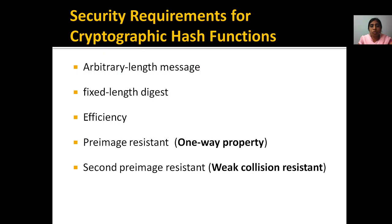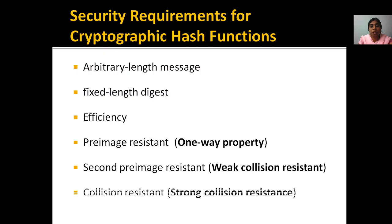Taking two messages, you are going to get different hash codes — that is weak collision resistant. Strong collision resistant is taking the same messages and deriving the same hash codes. The probability of getting the same hash code may be more — that is strong collision resistant.